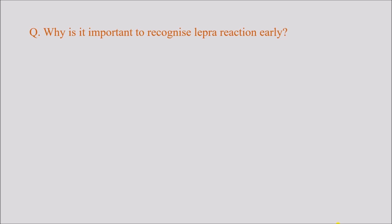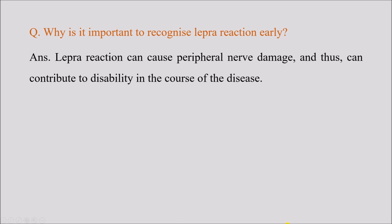It is important to recognize lepra reaction early because it can cause peripheral nerve damage, which can contribute to disability in the course of the disease. If we identify this lepra reaction very early and initiate management, we can avoid nerve damage and disability to some extent. That is why it is very important to identify the lepra reaction early in its course.